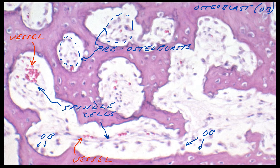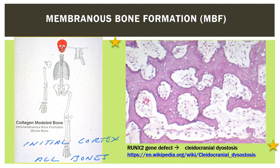Genetic faults in the RUNX2 osteogenic marker block normal bone formation at this level. Such genetic defects are responsible for cleidocranial dysostosis. While woven bone in the fetus and child forms the initial cortex of all bones, it is always pathologic in the adult. Rapid bone loss, as in stress reaction or fracture, acute infection, or rapidly growing tumor, induces woven bone in response.